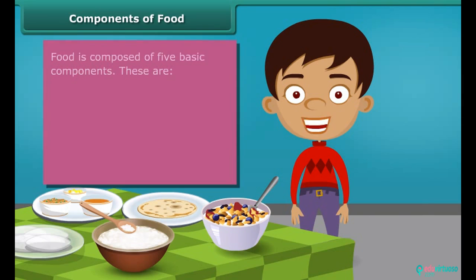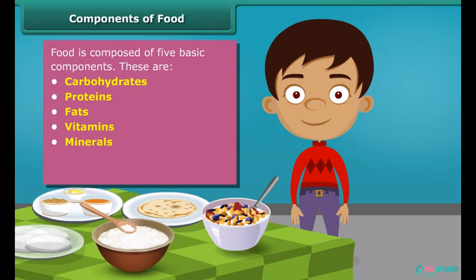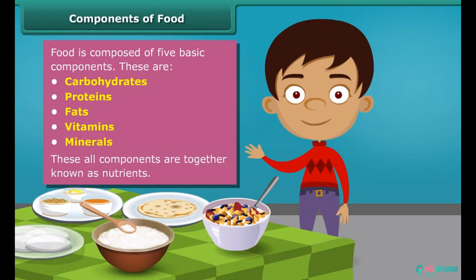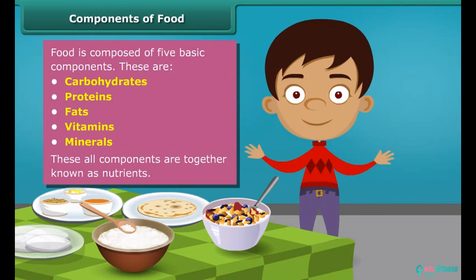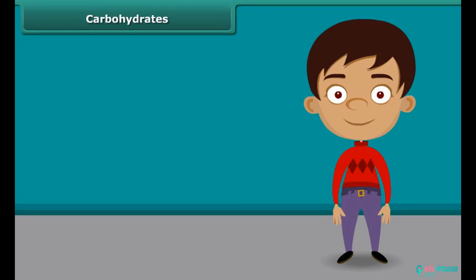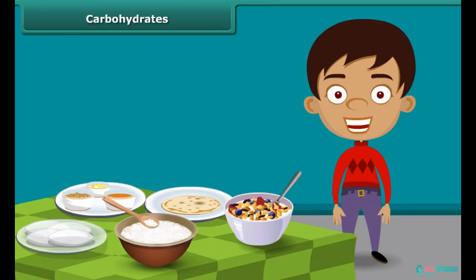Food has five basic components in it. These are carbohydrates, proteins, fats, vitamins and minerals. All these components together are called nutrients. A body digests food and absorbs these nutrients to provide energy. Some nutrients help us fight against diseases. Each food item contains all nutrients in different amounts and each nutrient plays a different role in the body. Let us know about these nutrients one by one in detail.